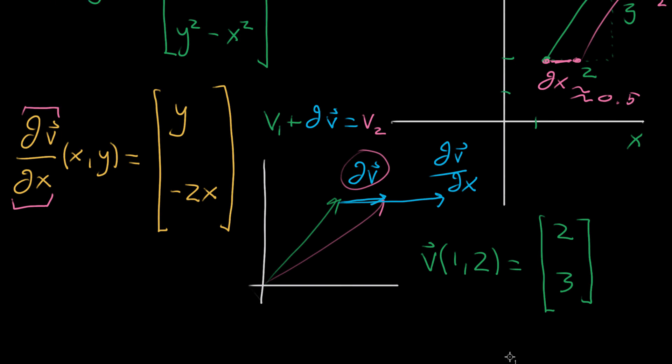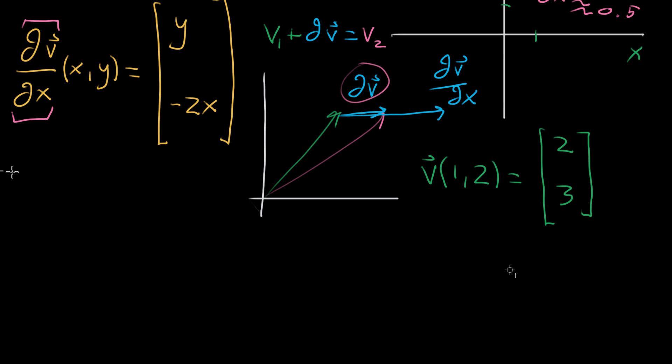So just to be concrete, and actually compute this guy, let's say we were to take this partial derivative, partial of v with respect to x, and evaluate it at that point, one, two, that we're just dealing with. What that would mean, y is equal to two, so that first component is two, and then x is equal to one, so that next one should be negative two.